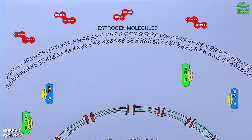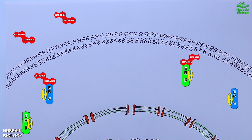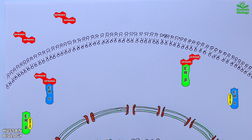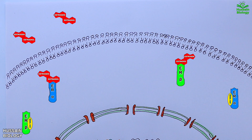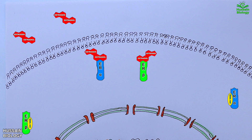To drive the signaling pathway, estrogen molecules outside the cell enter the cell and bind with the ER monomers. This estrogen binding mediates the removal of HSP90 molecules from the receptors. Once the estrogen receptor monomers are free of HSP90, the dimerization process begins.